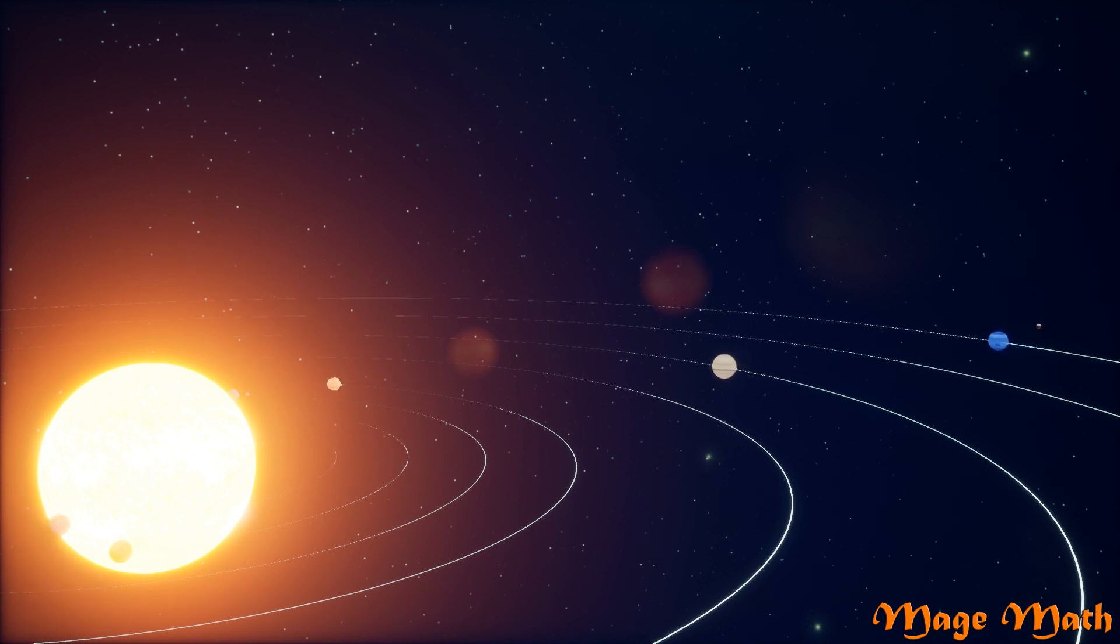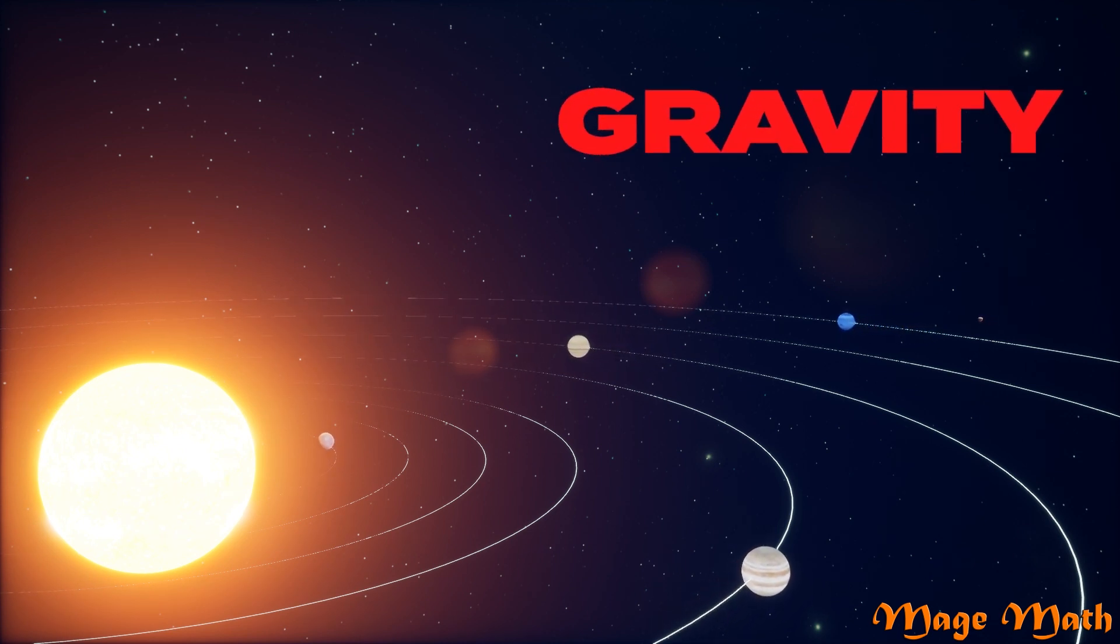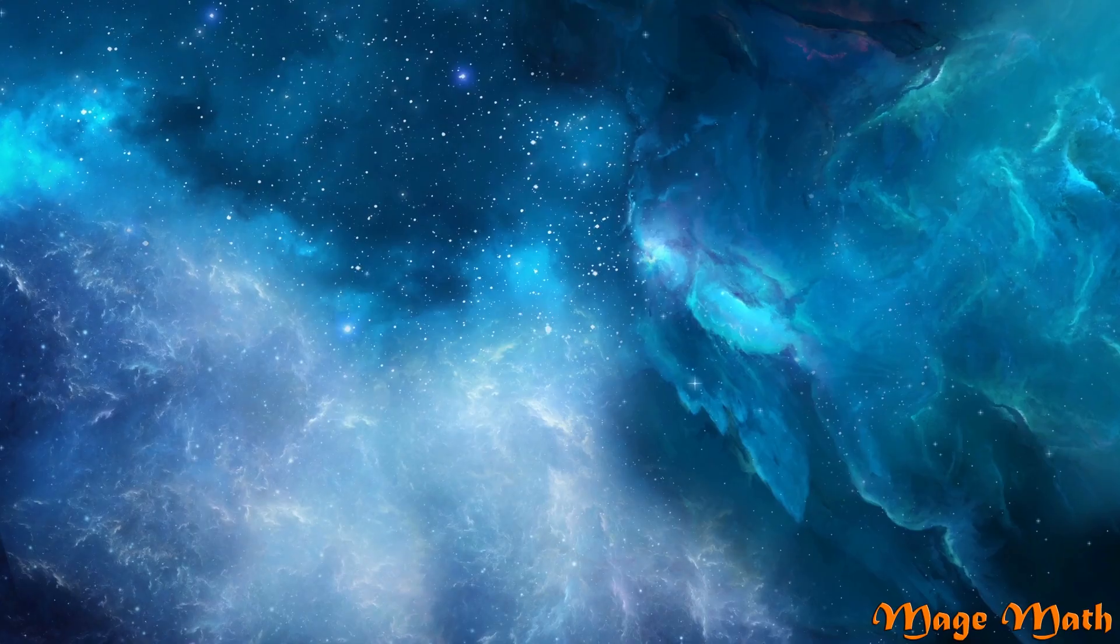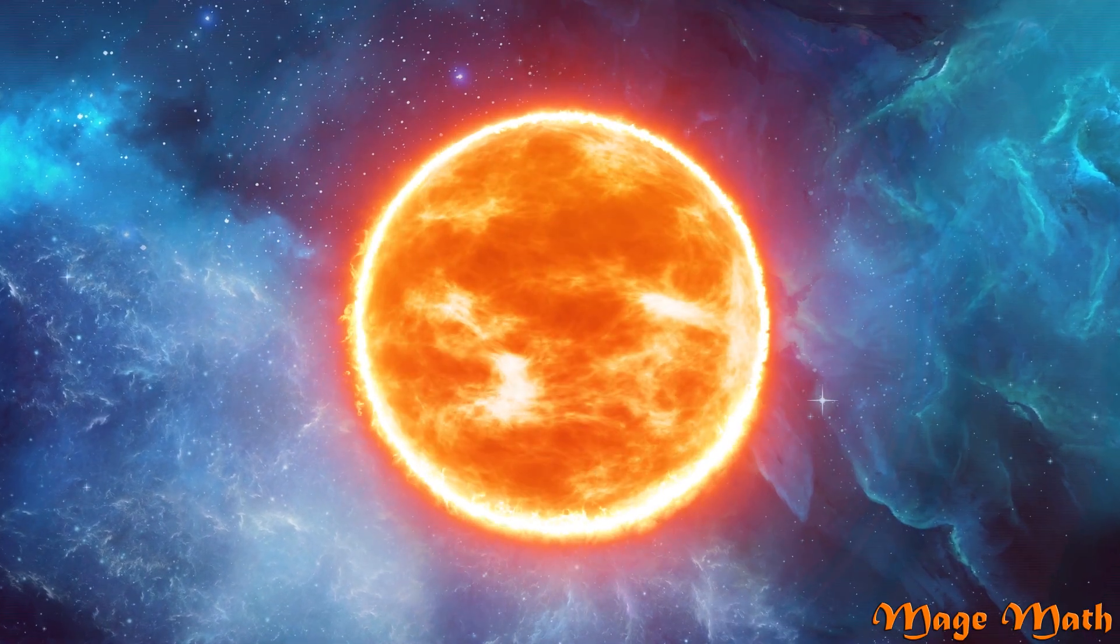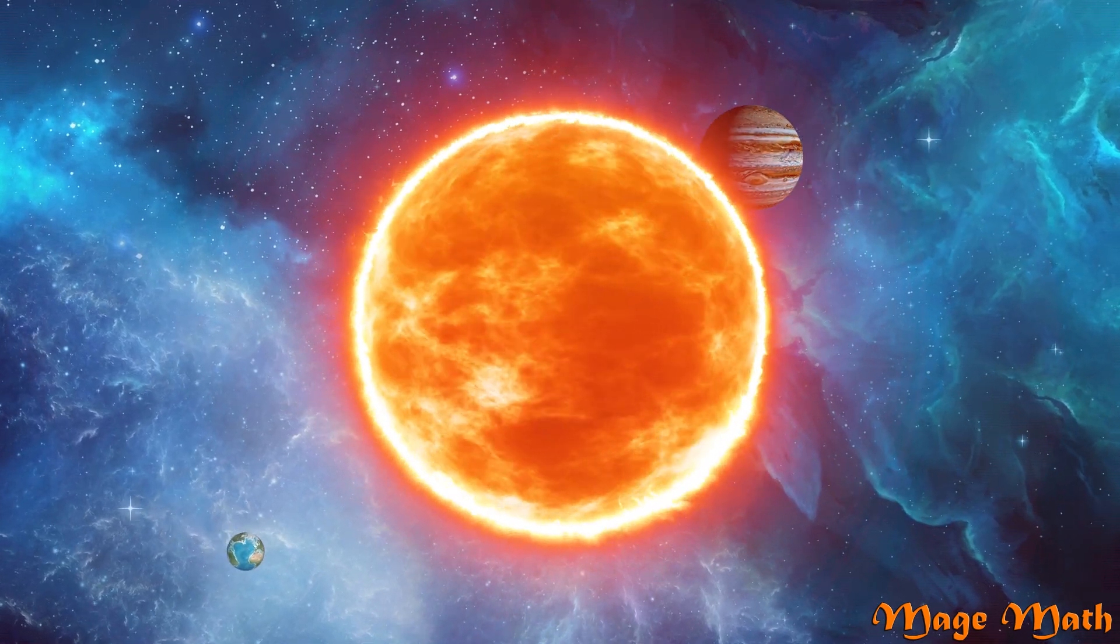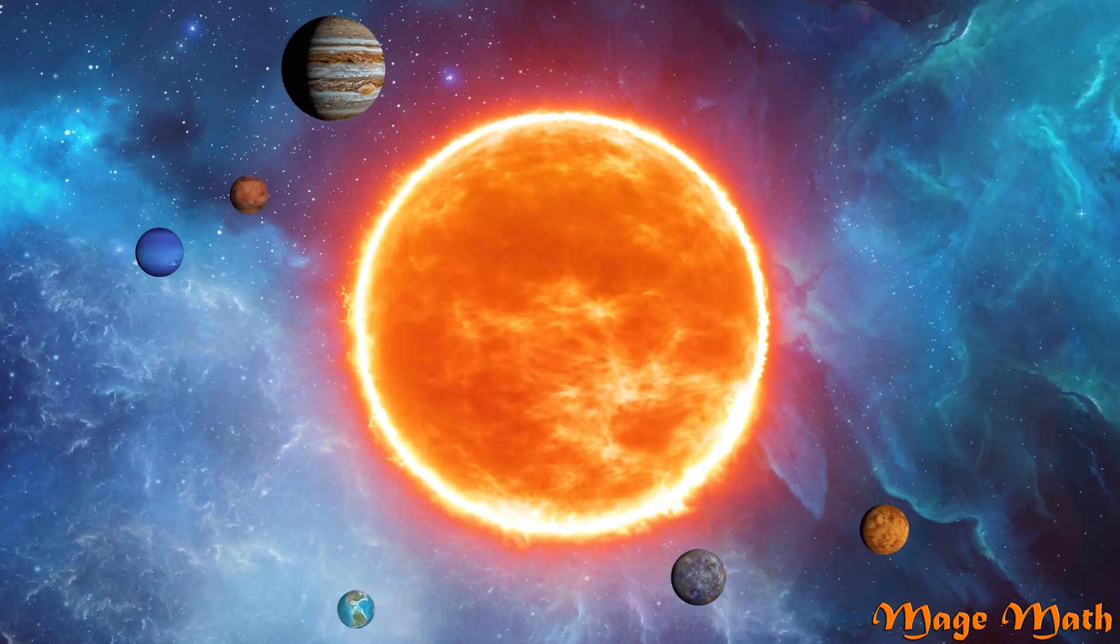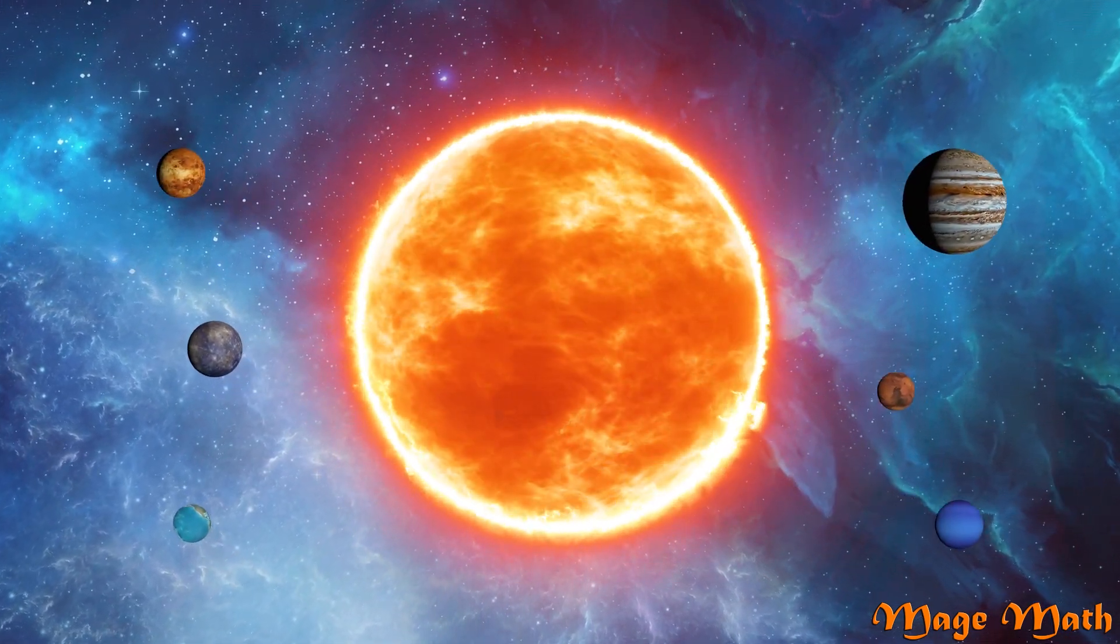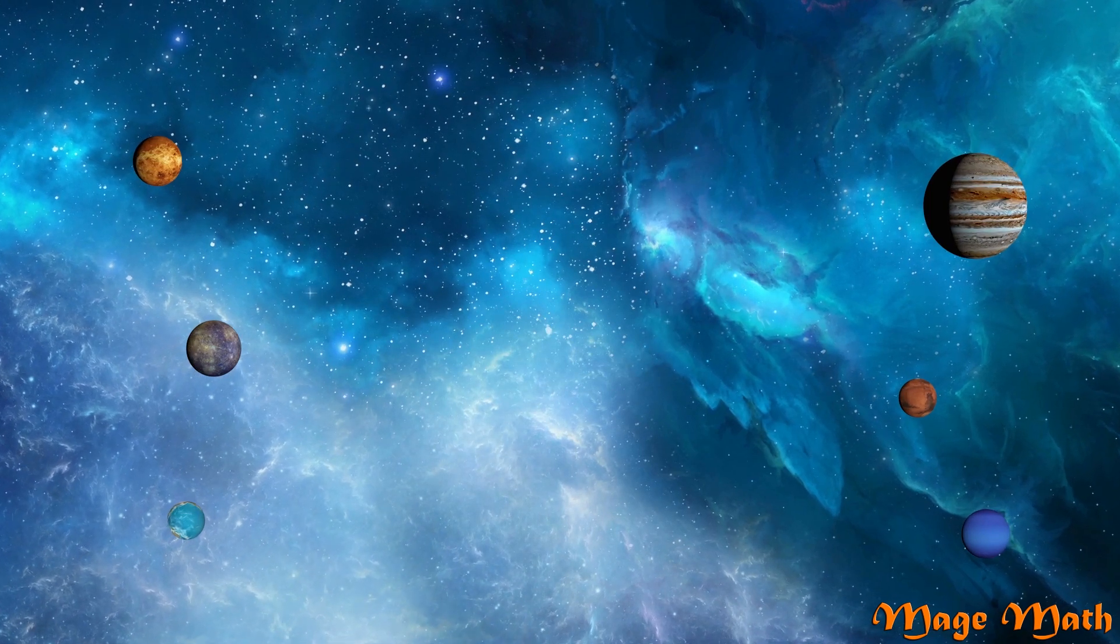There is one other thing that our sun does for us that we may not even notice. The sun has an immense amount of gravity which keeps us safe. Gravity is a force of attraction that keeps us on earth and stops us from floating away. The sun's gravity keeps all the planets, asteroids, and comets revolving around it. Basically, the gravity of the sun keeps all things in order in our solar system. Without the sun, the planets would just fly off to who knows where.